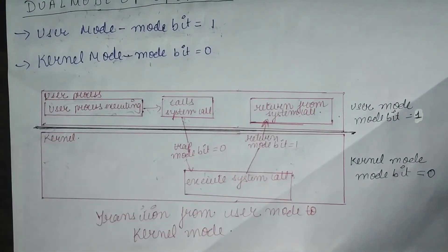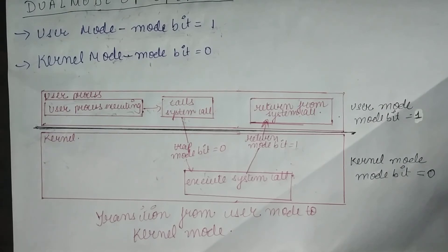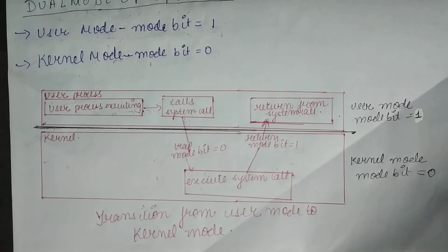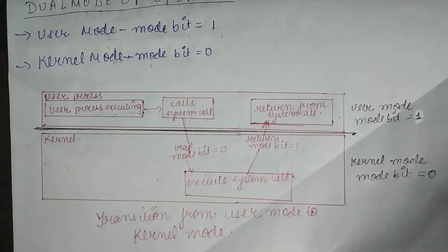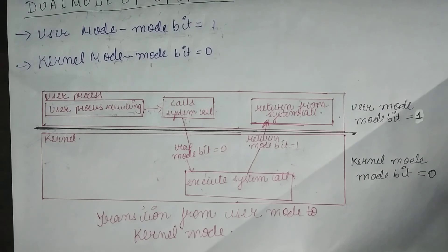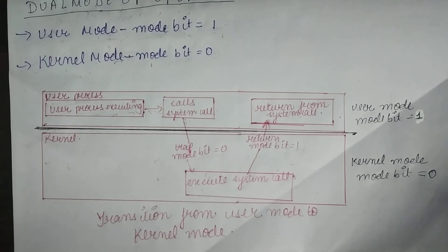That was all about dual mode. Now coming to multi-mode — multi-mode means there are multiple modes of operation, not just two. The example for this is a system which supports virtualization. Virtualization allows an operating system to run as an application within another operating system. In that kind of system, the CPU has a separate mode to indicate when the virtual machine manager — the virtualization management software — is in control of the system. Both of these modes are required for supporting virtualization.